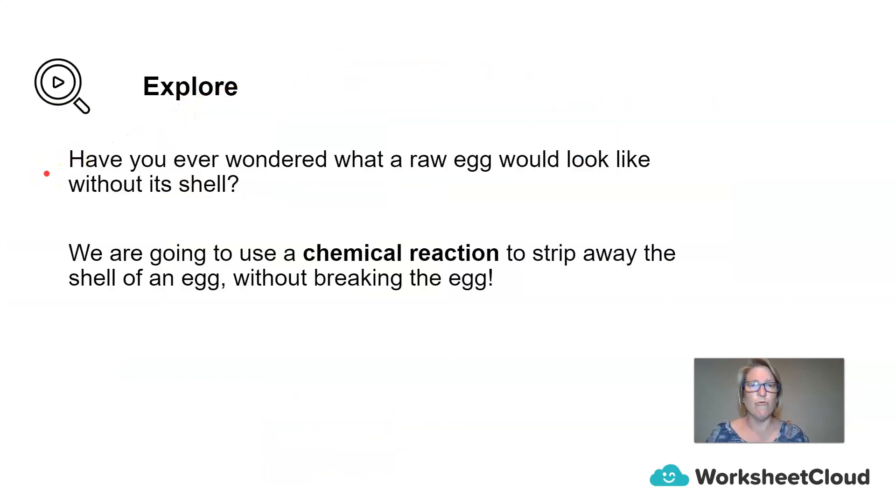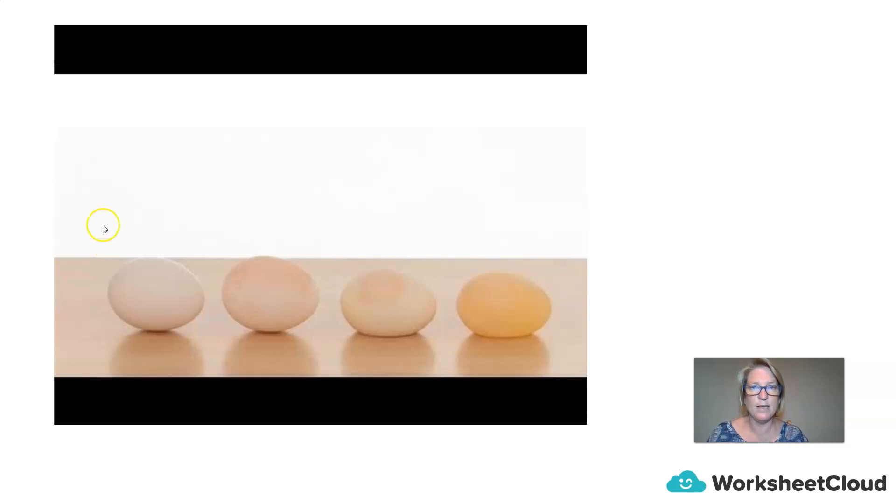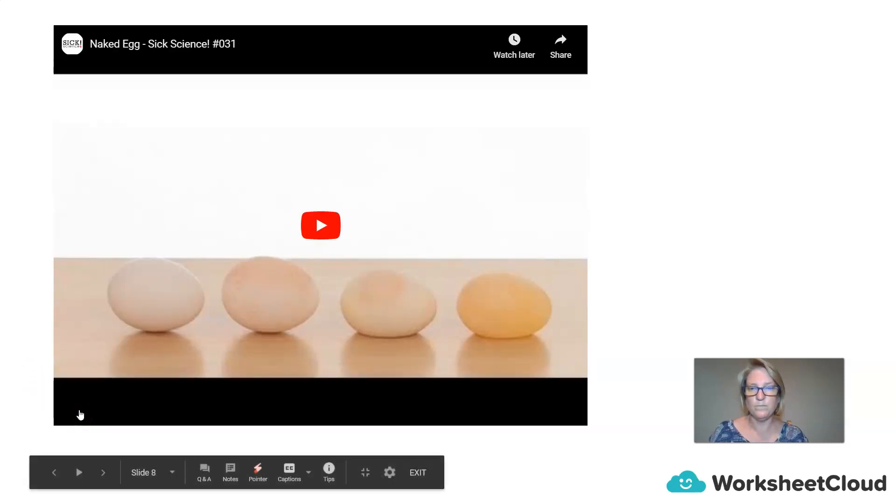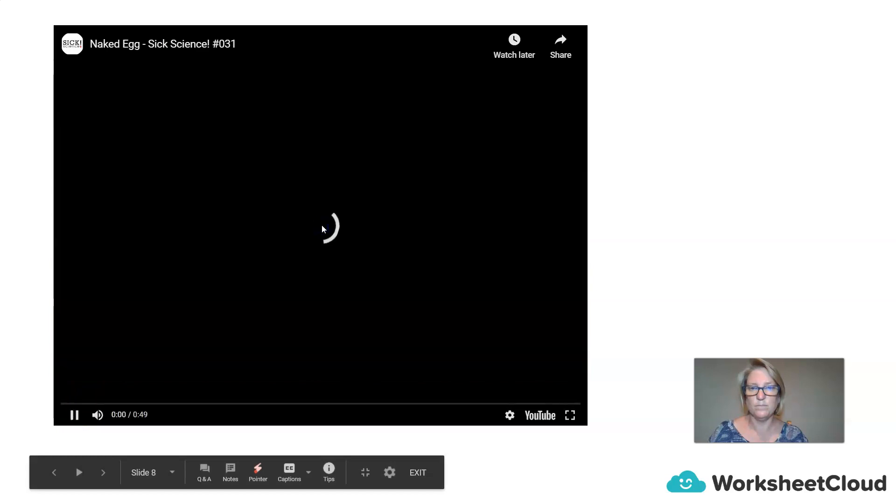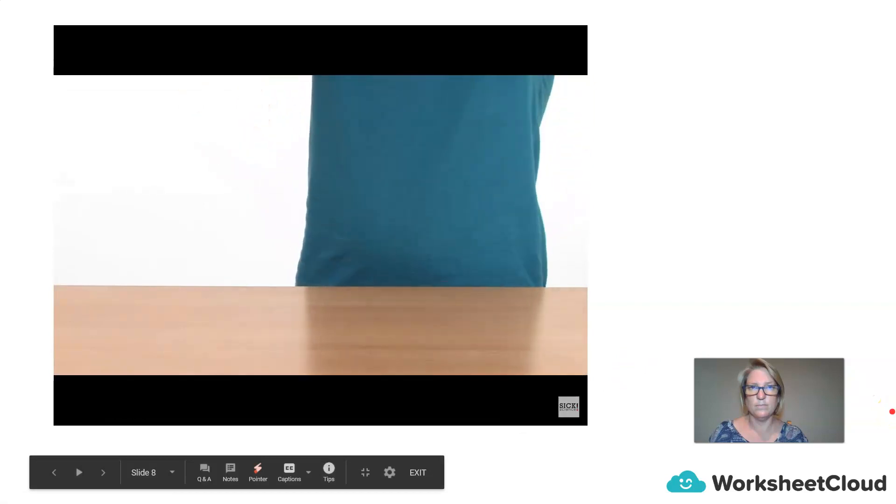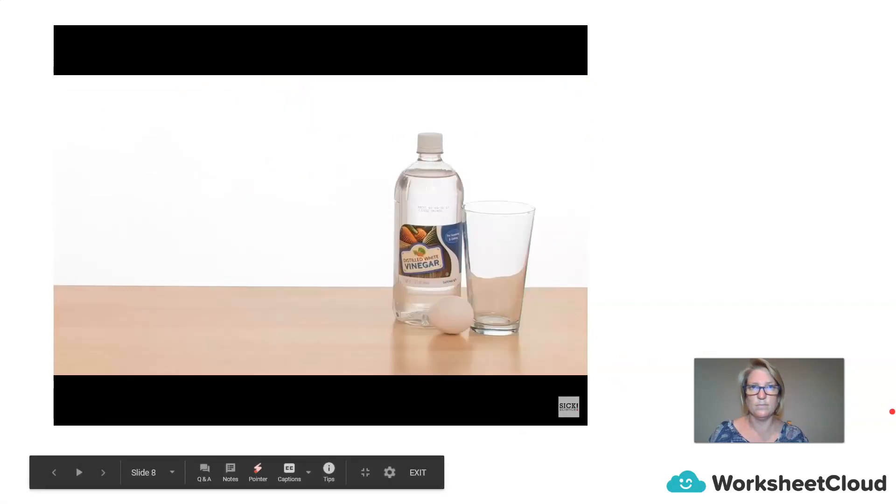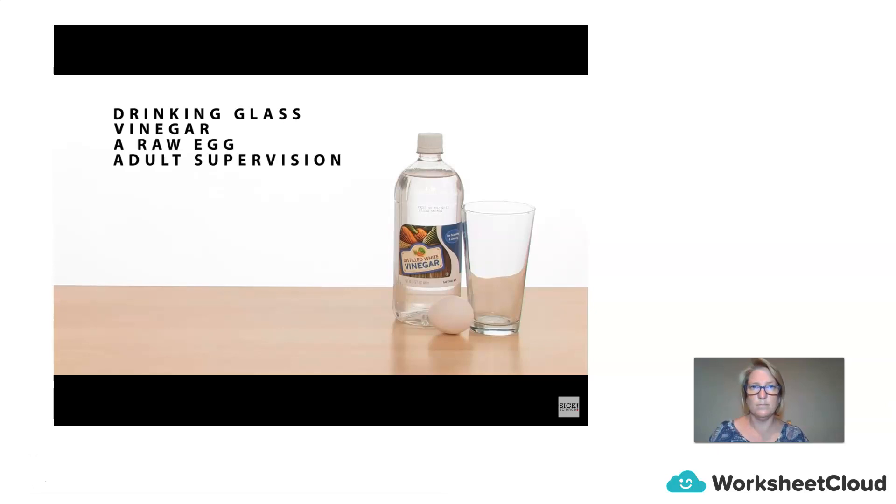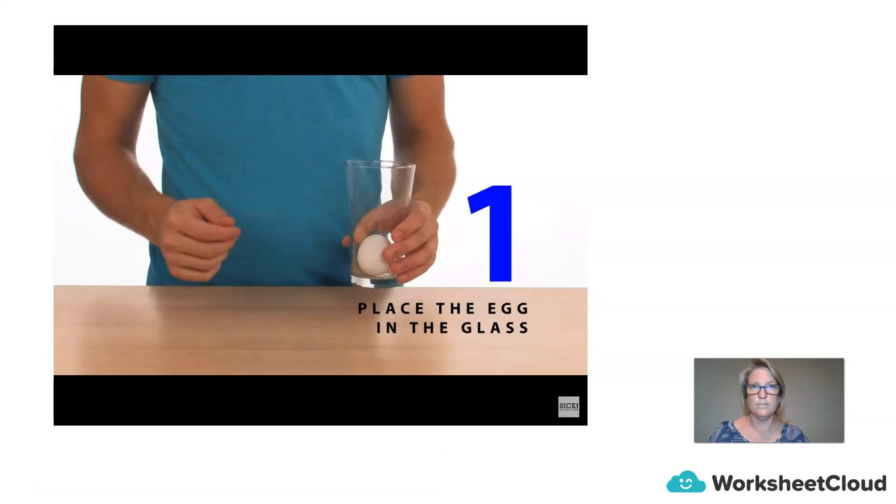Have you ever wondered what a raw egg would look like without its shell? Well, we are going to use a chemical reaction to strip away the shell of an egg without breaking the egg. So let's get started.